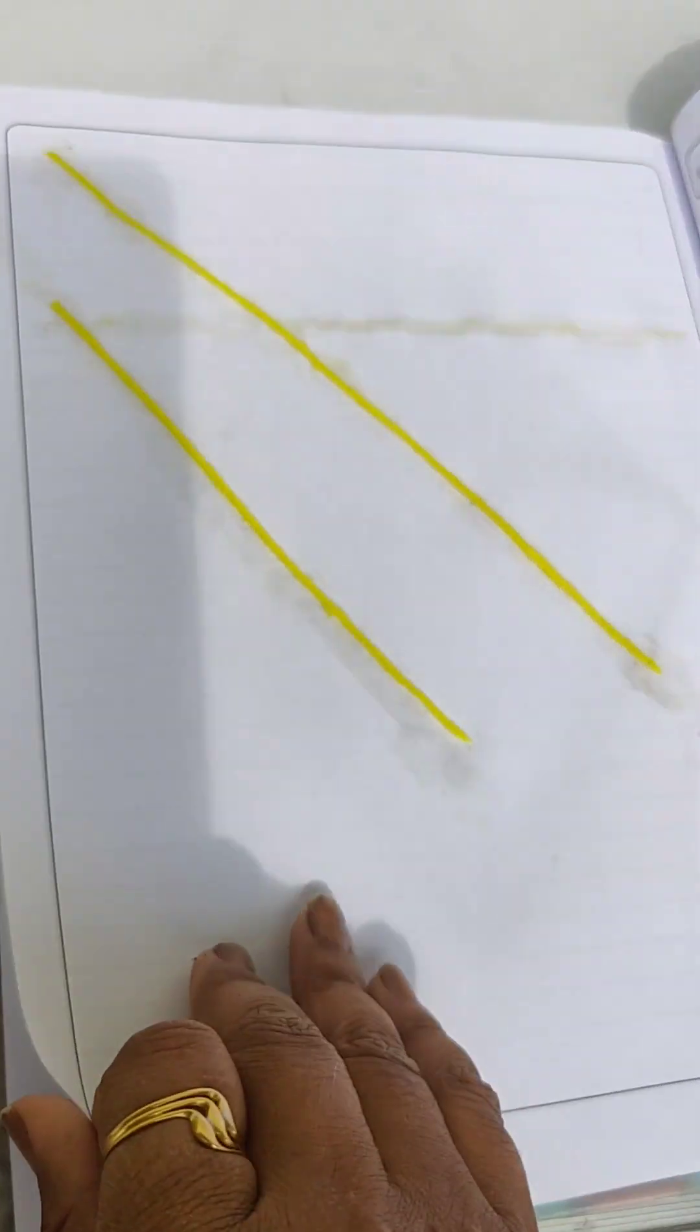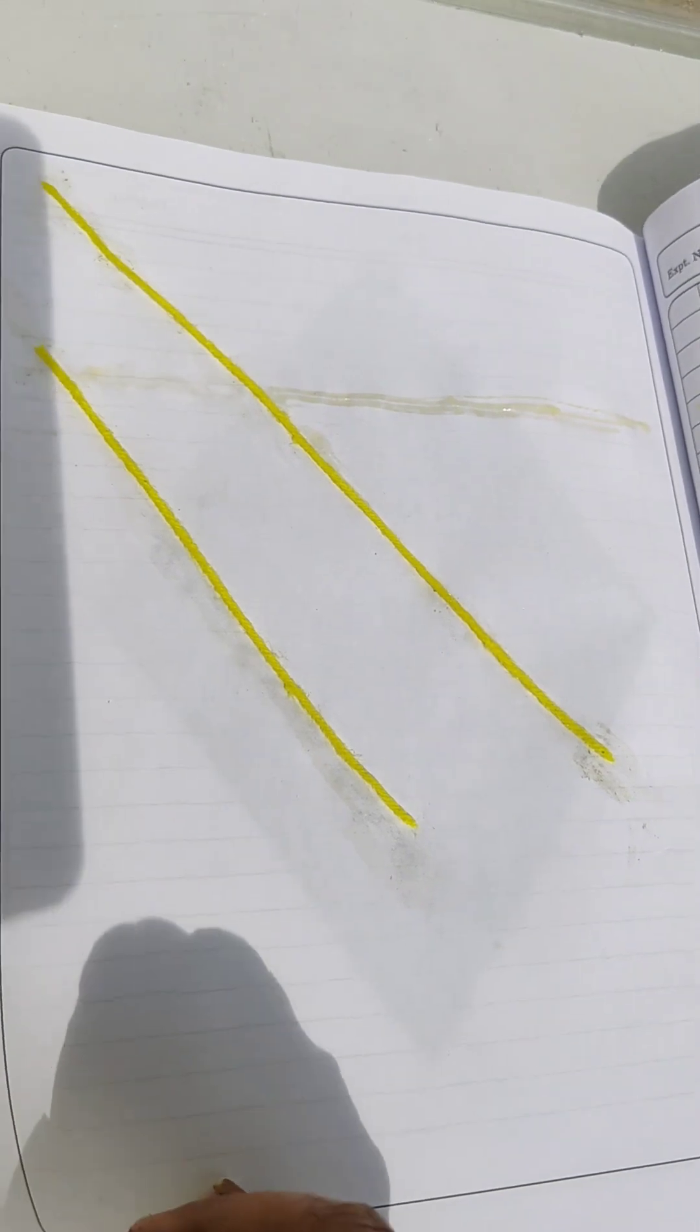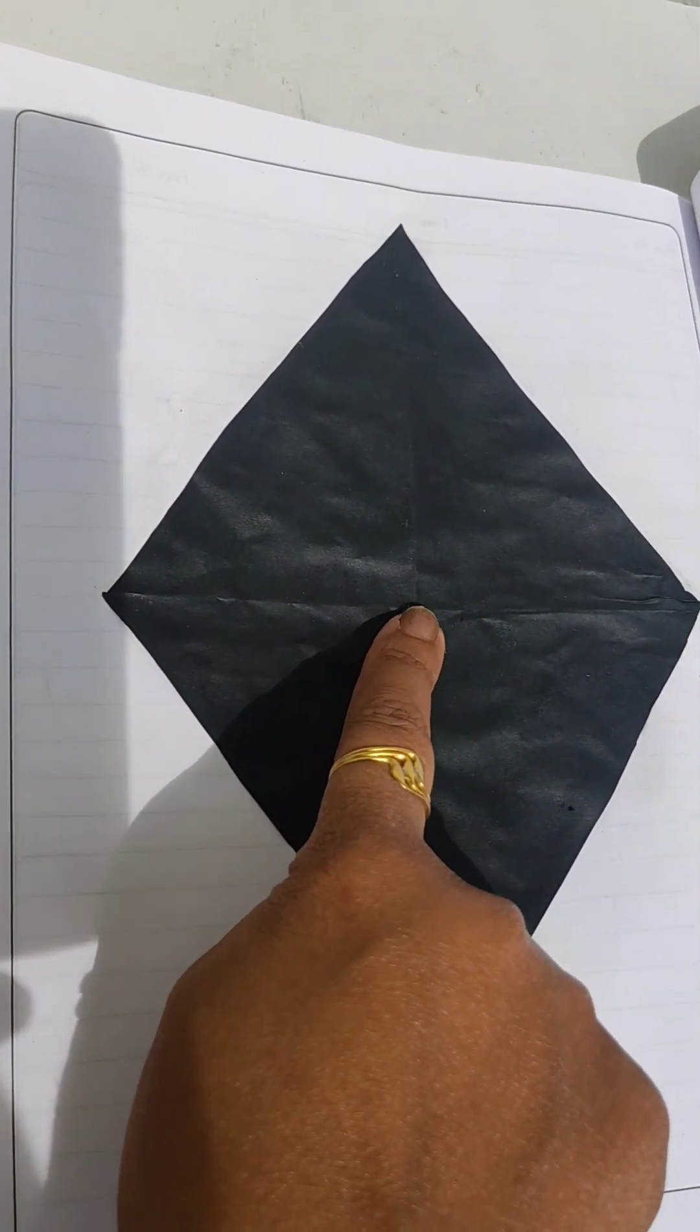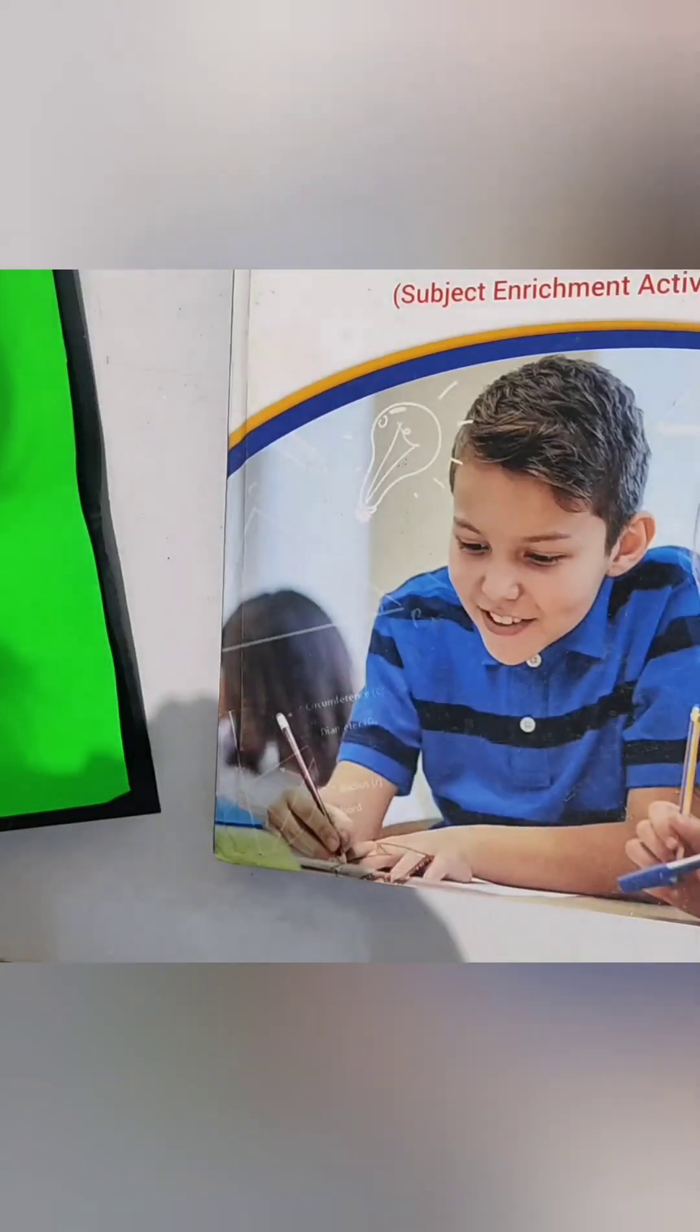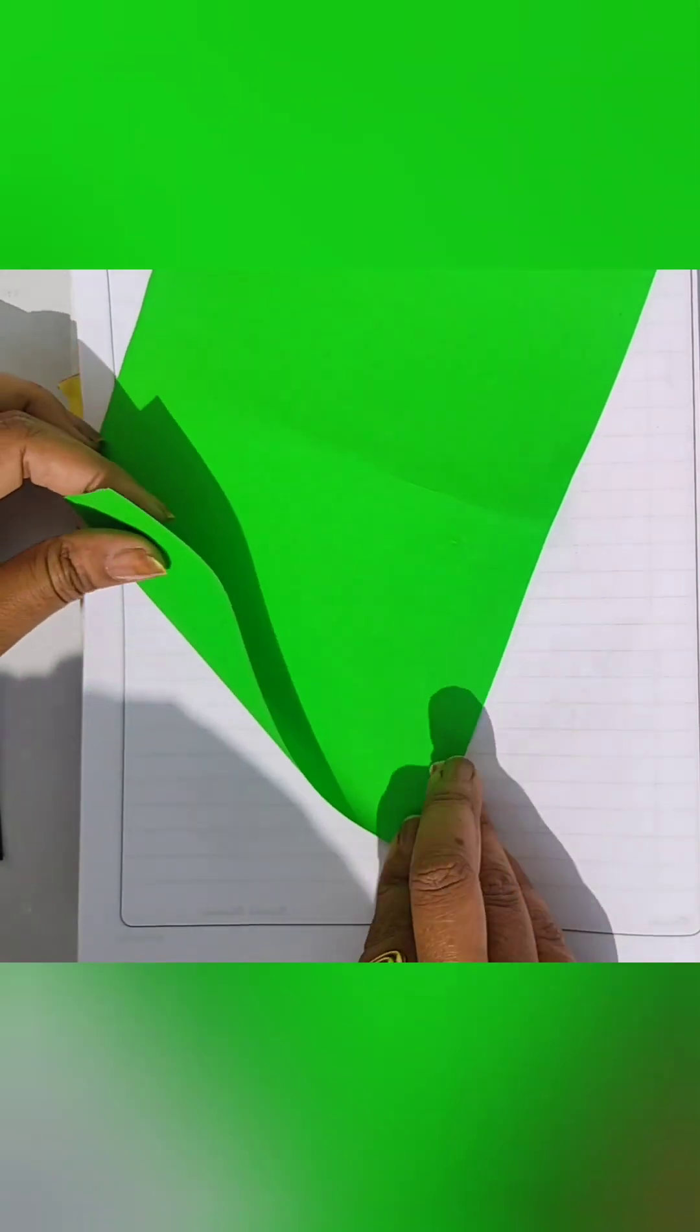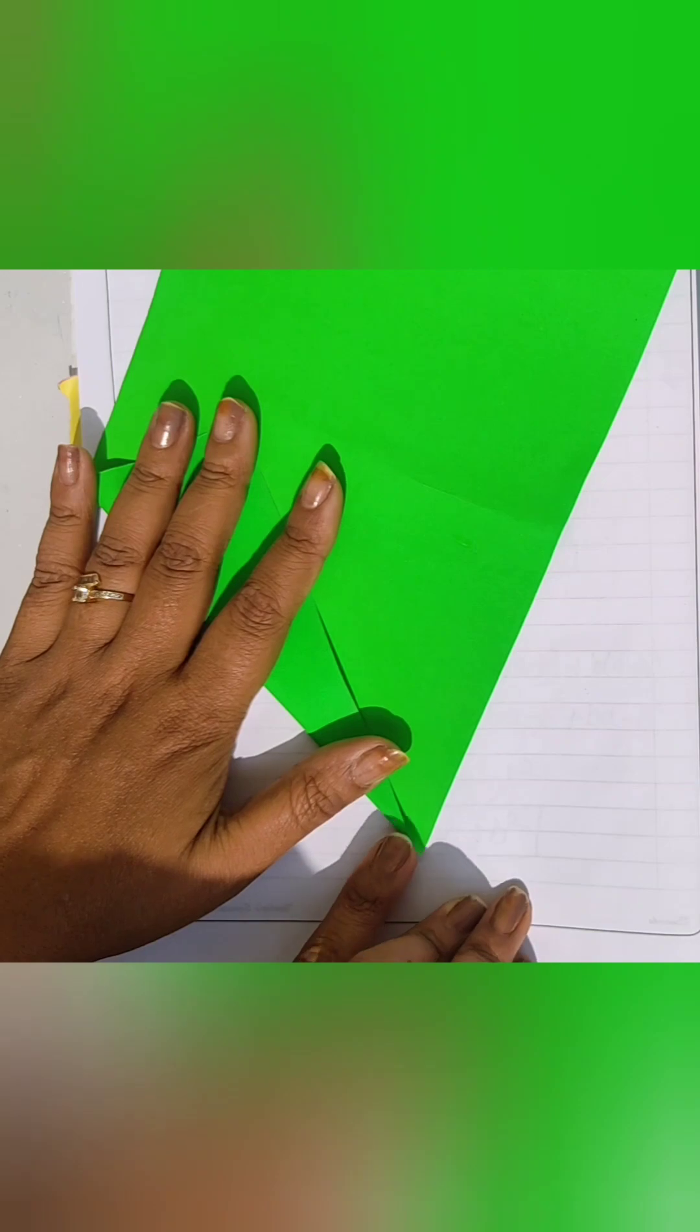Do you know in our previous video we have already learned the diagonals relationship of square and rectangles? So let's start today. For this activity we need any two color papers for the two different objects and then some threads and of course our glue.